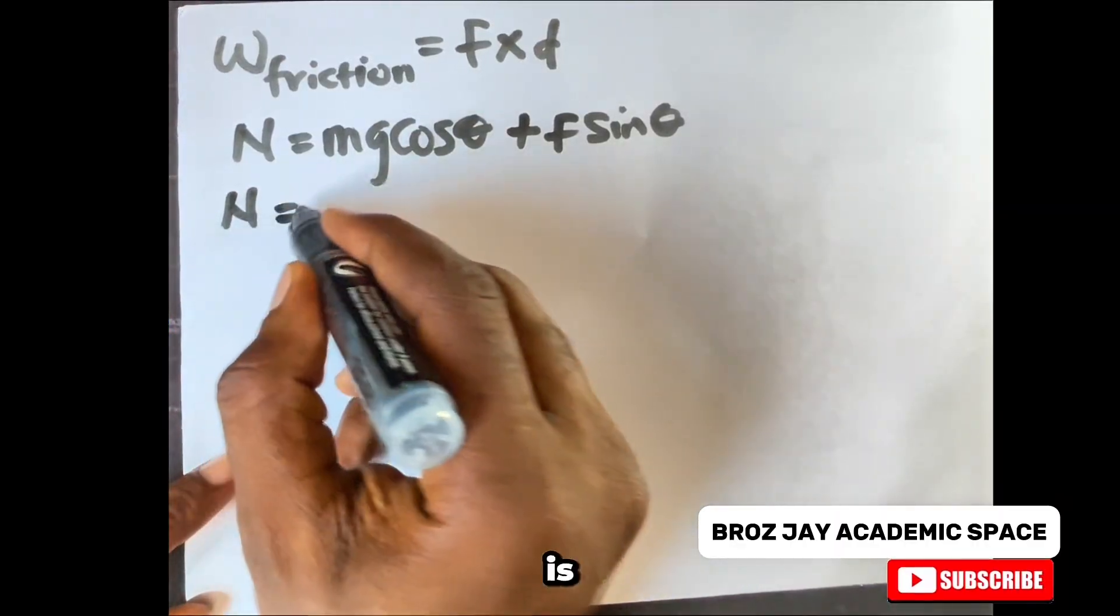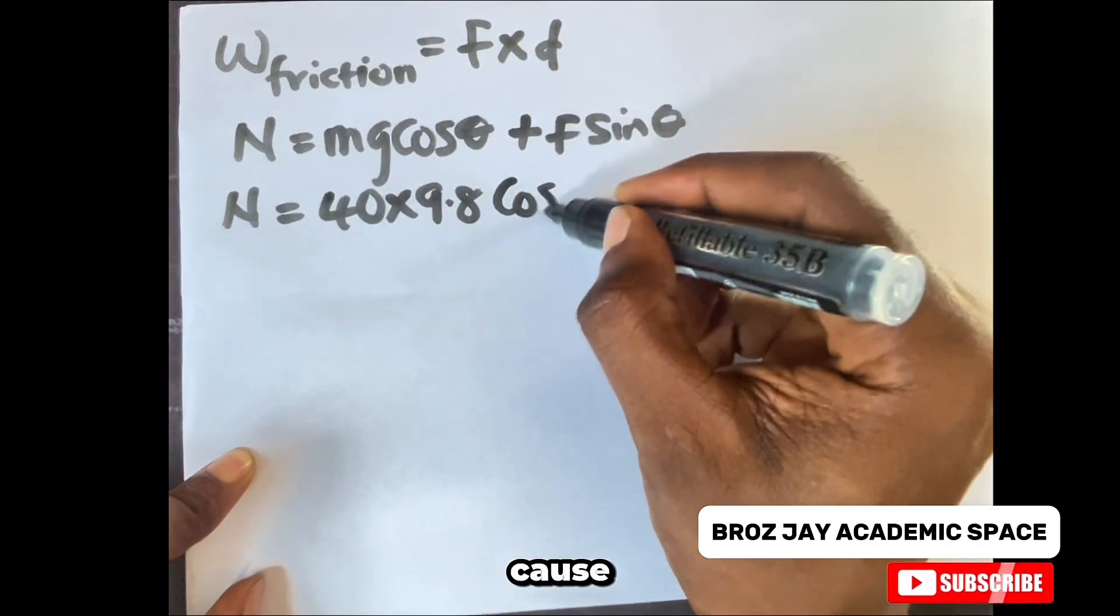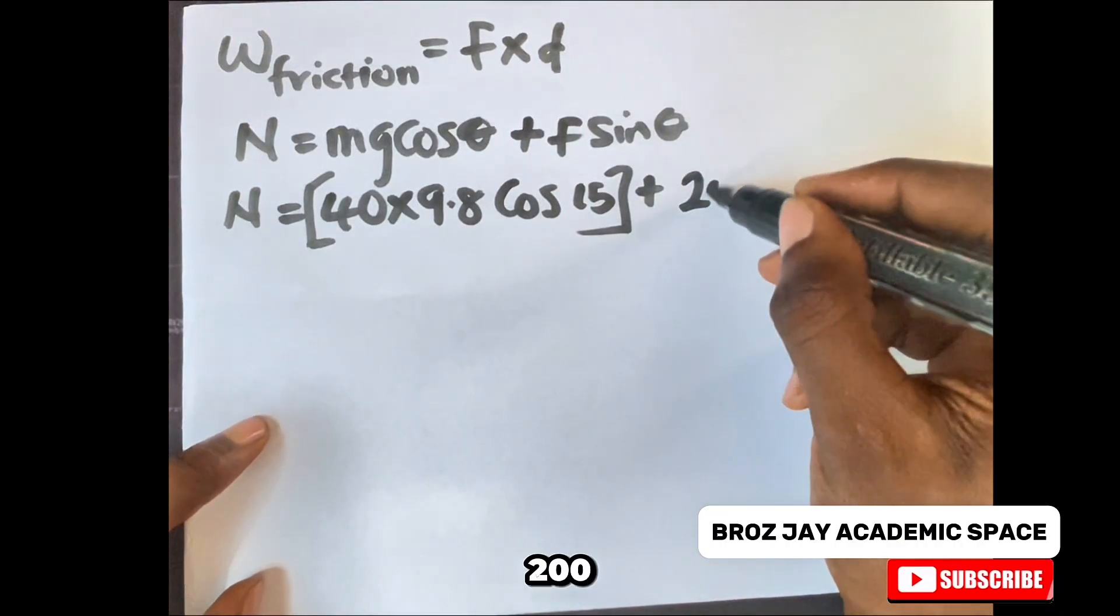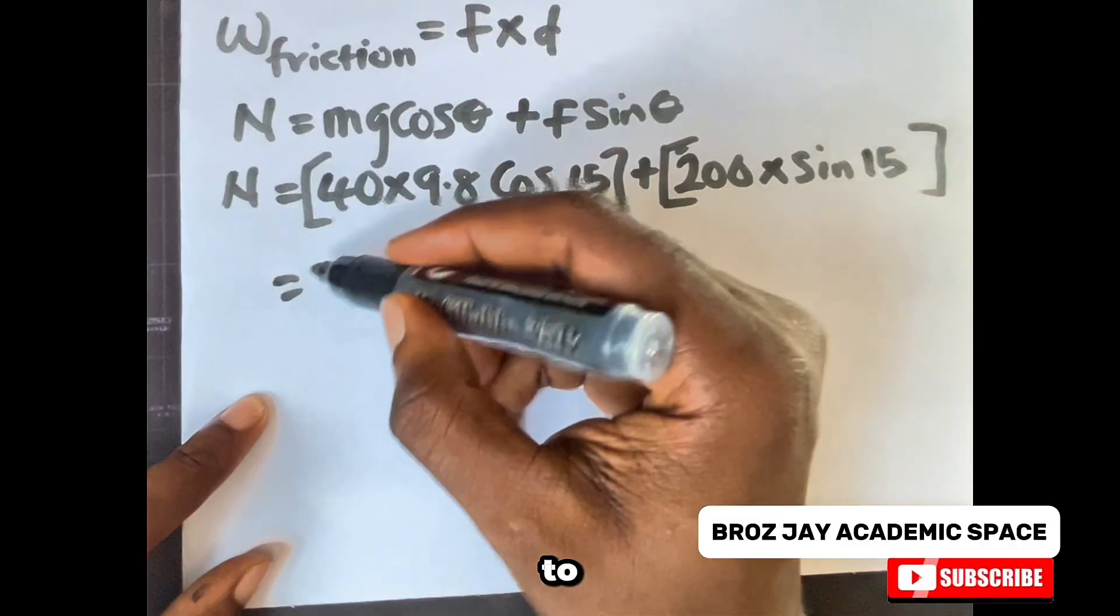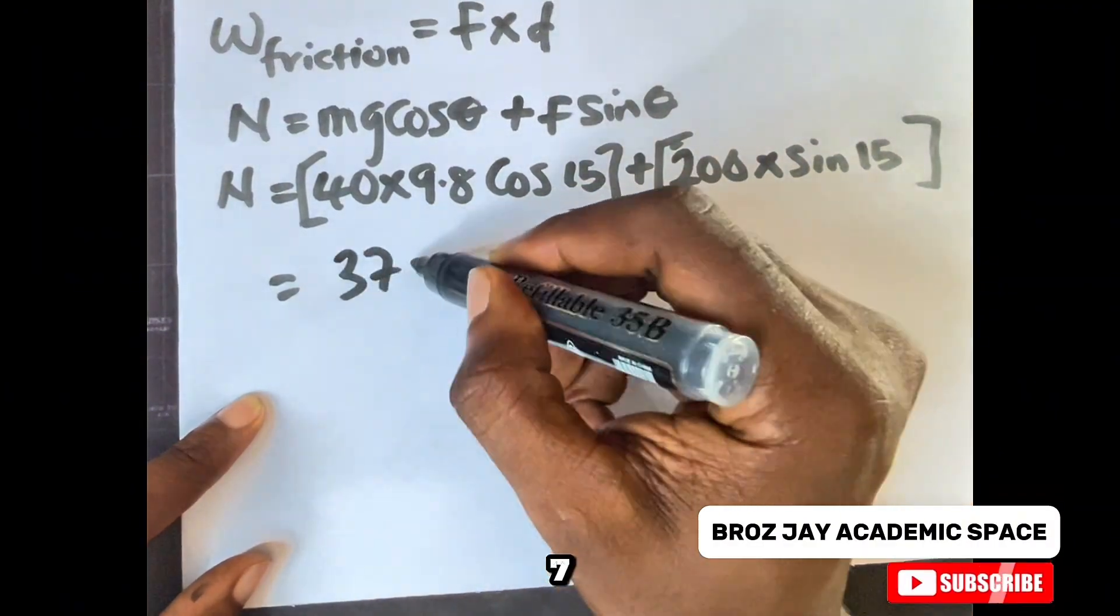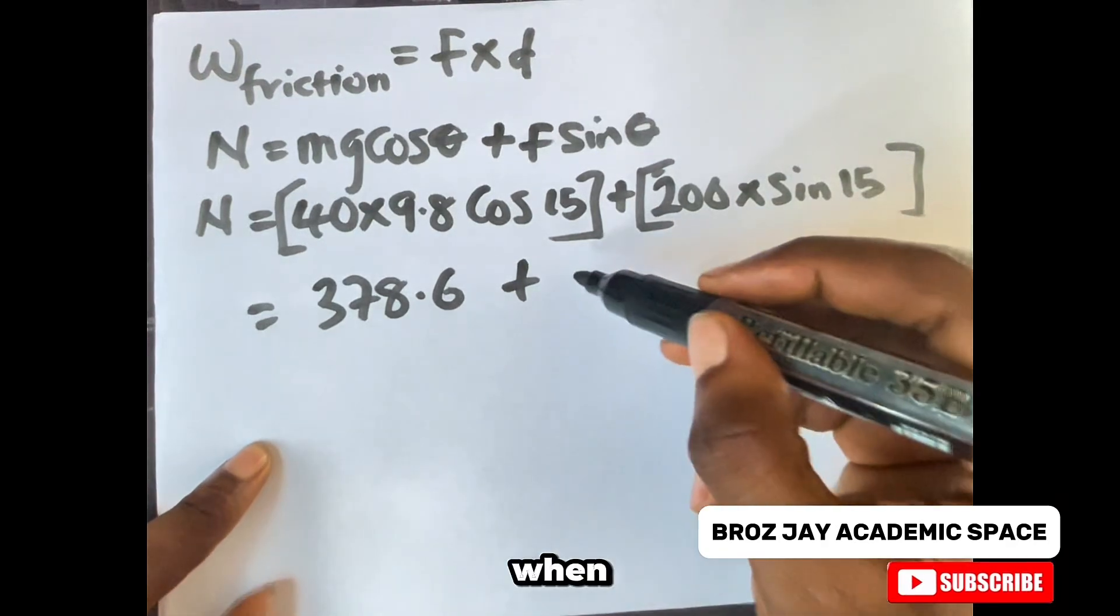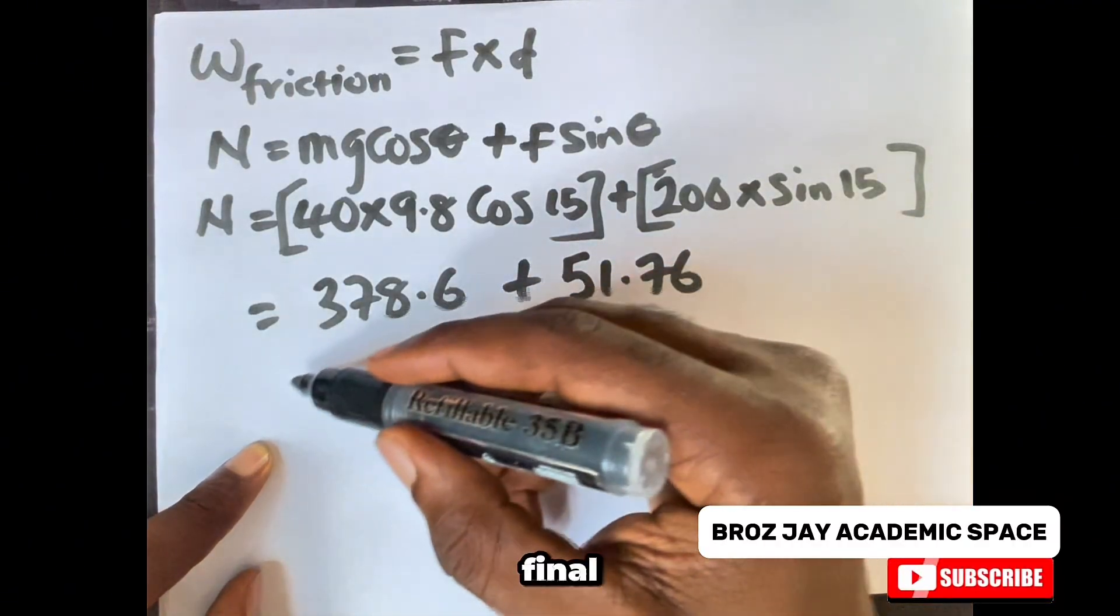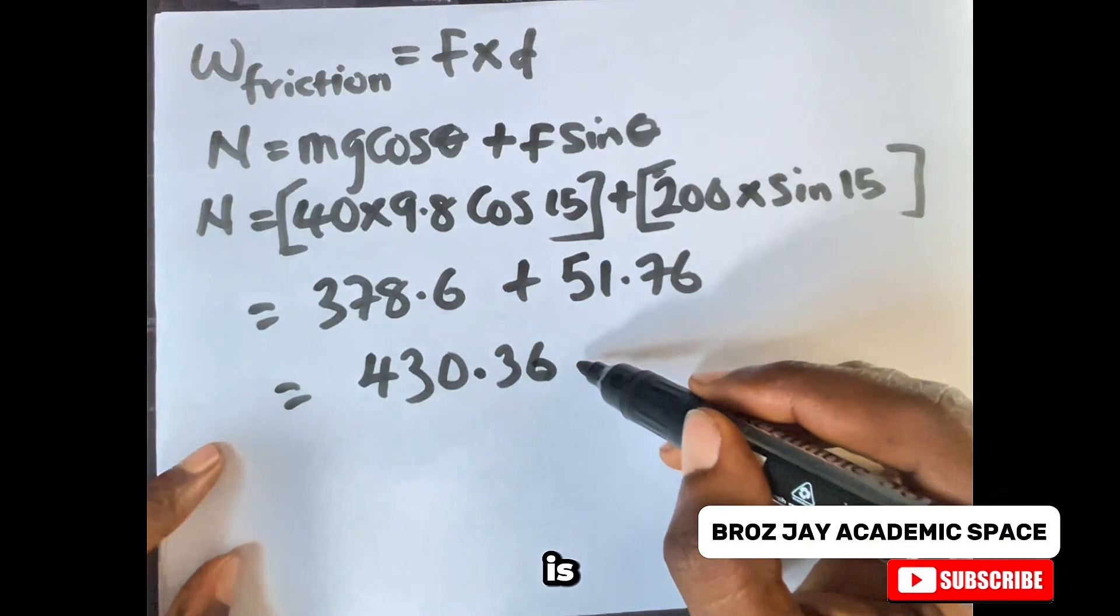My N, the normal force, equals the mass 40 times 9.8 cos 15 plus 200 times sine 15. If you use your calculator, the final answer here will give you 378.6 plus—make sure you do it step by step, there are two calculations inside here—plus 51.76. Therefore my final answer here will be 430.36 N, the normal force.